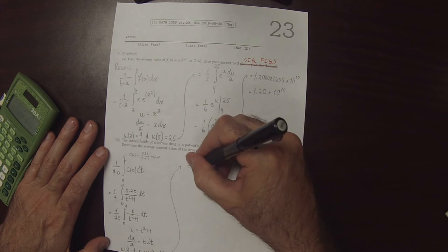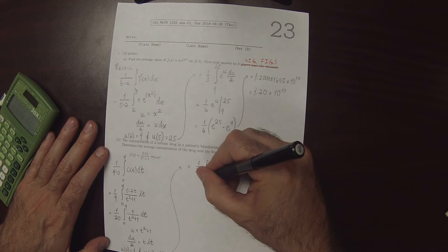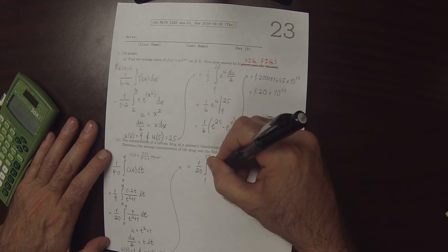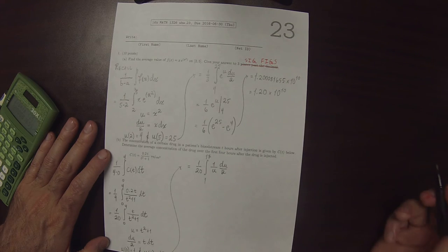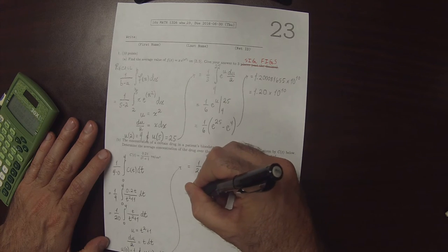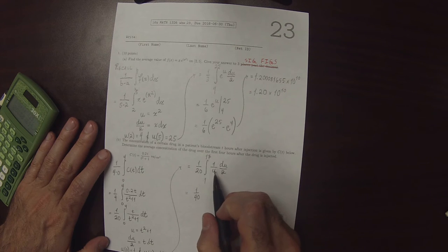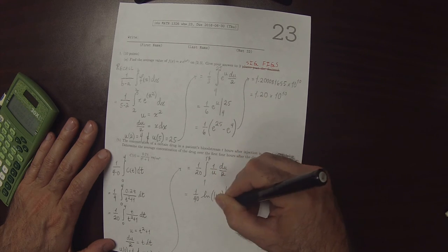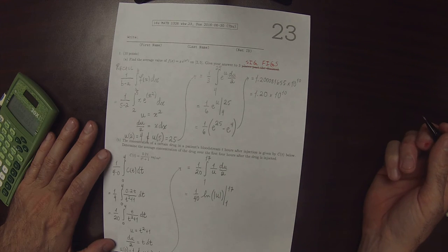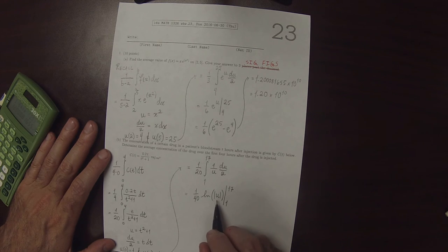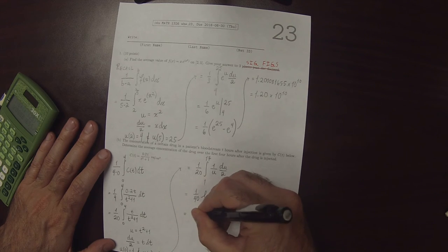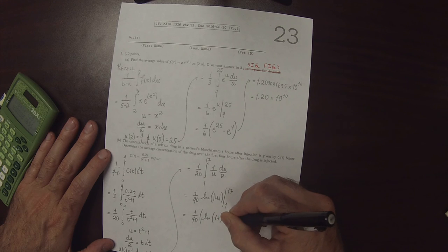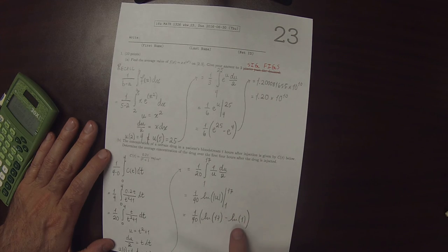So this would be 1 over 20, integral 1 to 17. This division by 2 can come out to make 1 over 40. And then we can use the fundamental theorem, antiderivative 1 over u is log absolute u. So this is log absolute u, evaluated from 1 to 17. It's nice that one of the evaluation points is 1, because the log of 1 is 0. So that means the answer is 1 over 40 times the log of 17 minus the log of 1. And as we said, that's 0. So this is just 1 over 40 log 17.